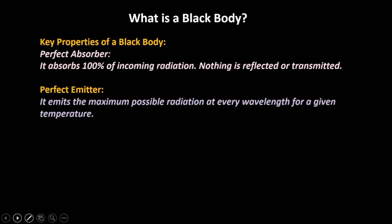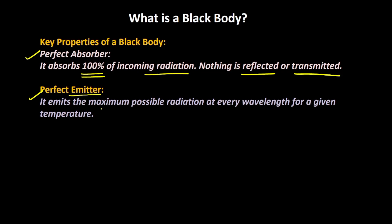Here are some important characteristics of a black body. A black body is a perfect absorber and a perfect emitter. Since it's a perfect absorber, it absorbs 100% of the incoming radiation — nothing is reflected or transmitted. And since it is a perfect emitter, it emits the maximum possible radiation at every wavelength for a given temperature.